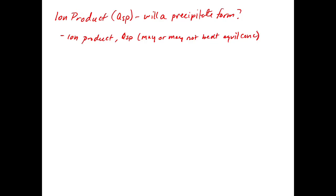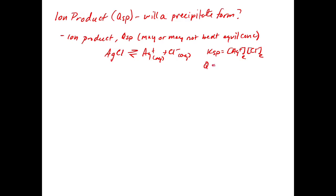For example, for silver chloride dissolving, we get silver ion and chloride ion in solution. Ksp equals the silver plus concentration times the chloride minus concentration — Ksp requires equilibrium concentrations. Q, or Qsp, on the other hand, takes the same form, but the concentrations don't have to be equilibrium values. This could be a concentration at any given point — before we reach equilibrium, or where concentrations are too large for equilibrium. So we can compare Q with K to make predictions about what's going to happen.